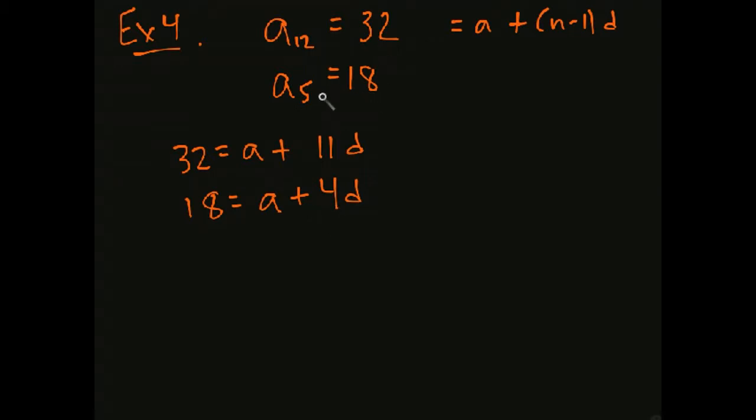okay, well, how many times do I add? So I go from 18, so that's a5, and then I have a6, a7, 8, 9, 10, 11, 12. And that gets me 32.